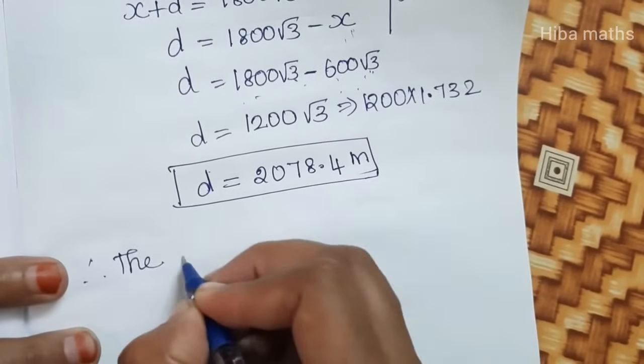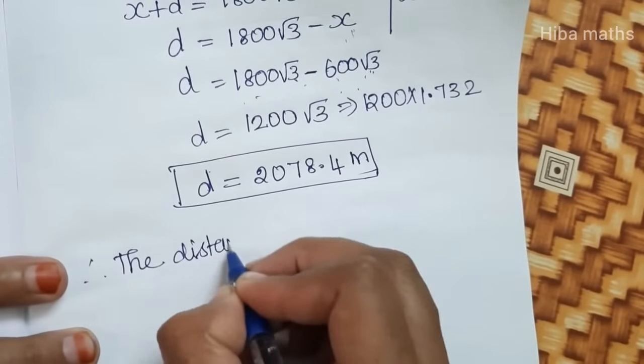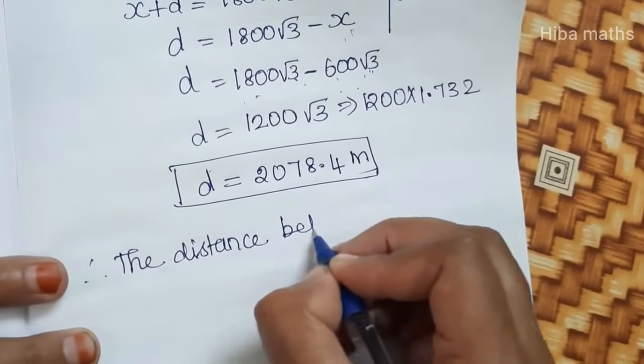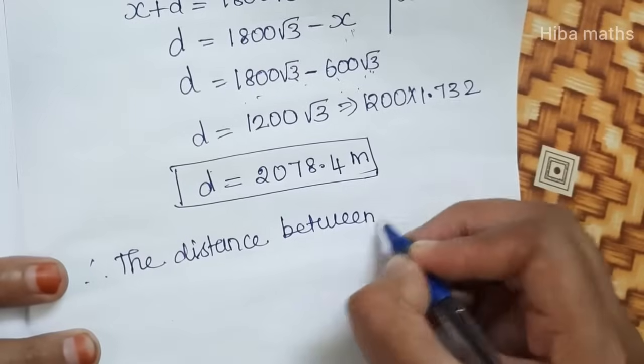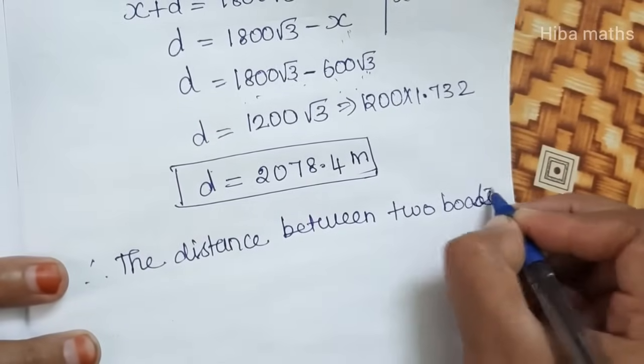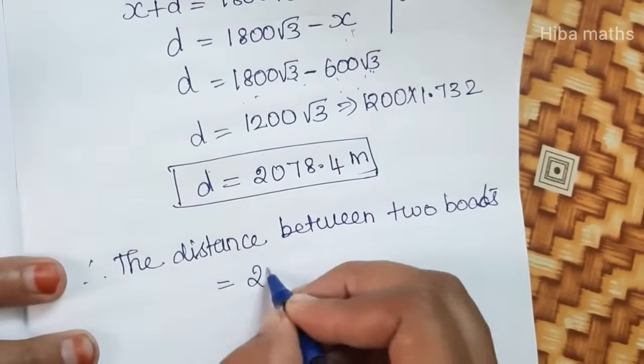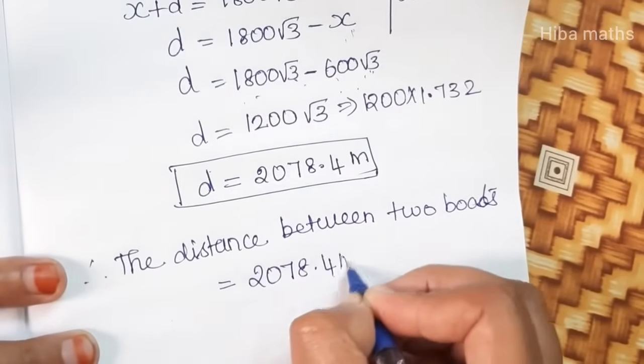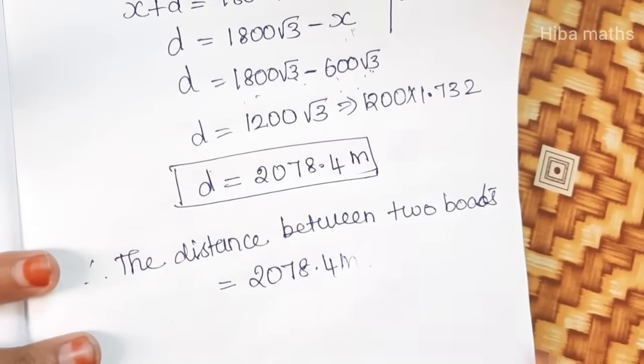Therefore, the distance between two boats is 2078.4 meters. Thank you so much for watching.